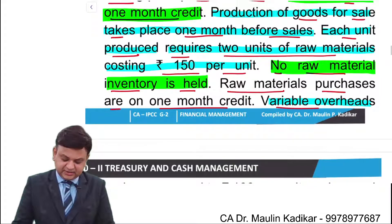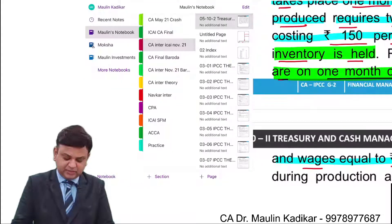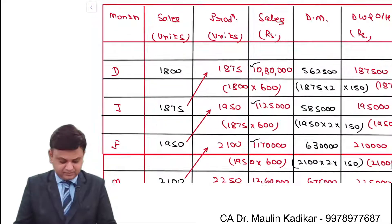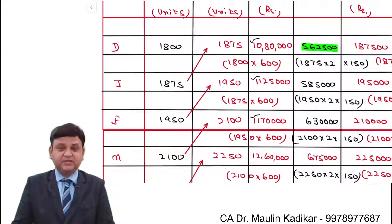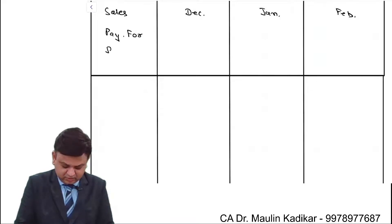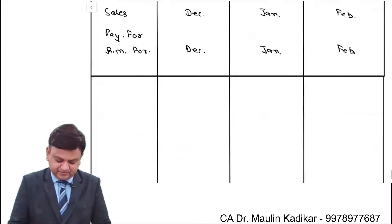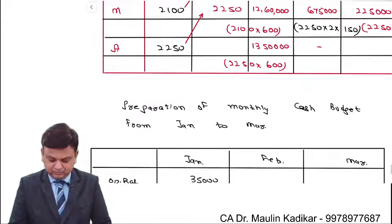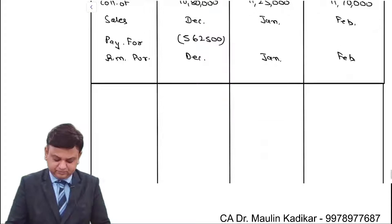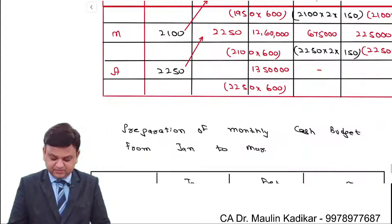Raw material purchases are on one month credit. December month purchase will be paid in January — that is 5,85,000. January's purchase of 5,85,000 will be paid in February, and February's purchase of 6,30,000 will be paid in March.